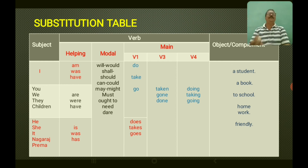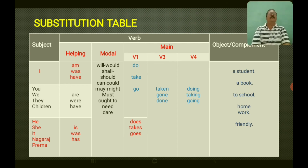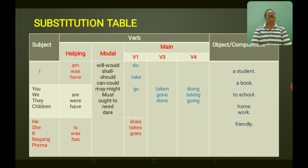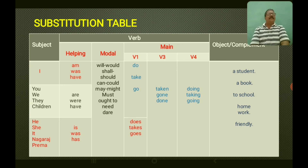Frame as many sentences as possible and write them down in your notebook, then send them to me. For example: 'I am a student,' 'You are taking a book,' 'He will do work.' In the substitution table you have the subject, verb, and object or complement. Write as many sentences as possible in your notes and send them to me. In the next video, let us continue learning about the other parts of speech.